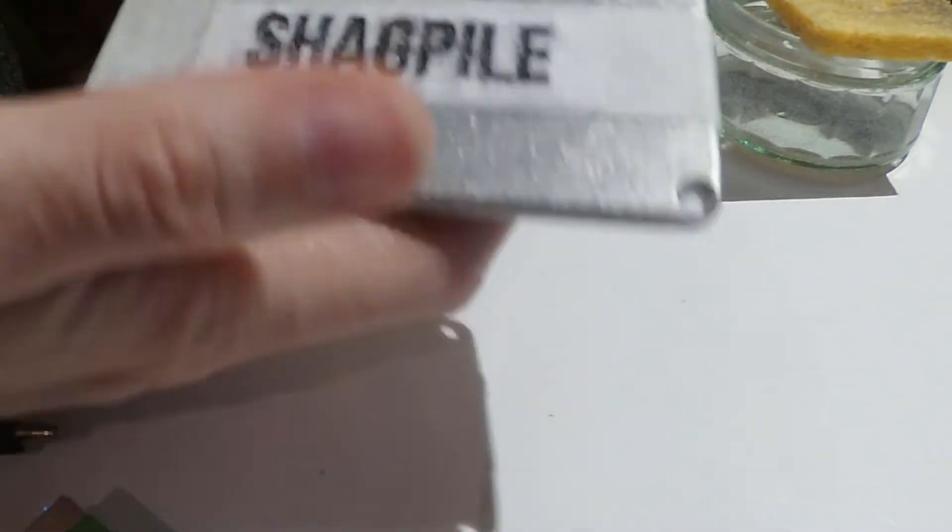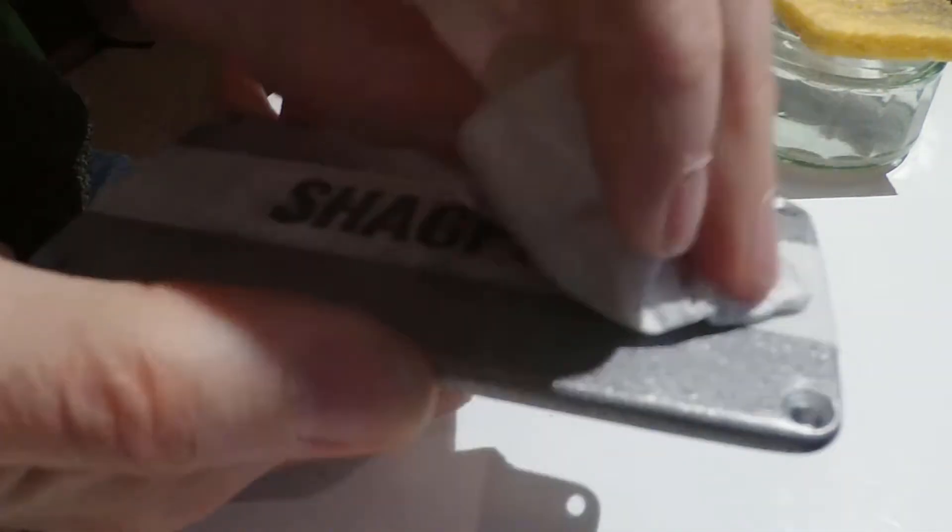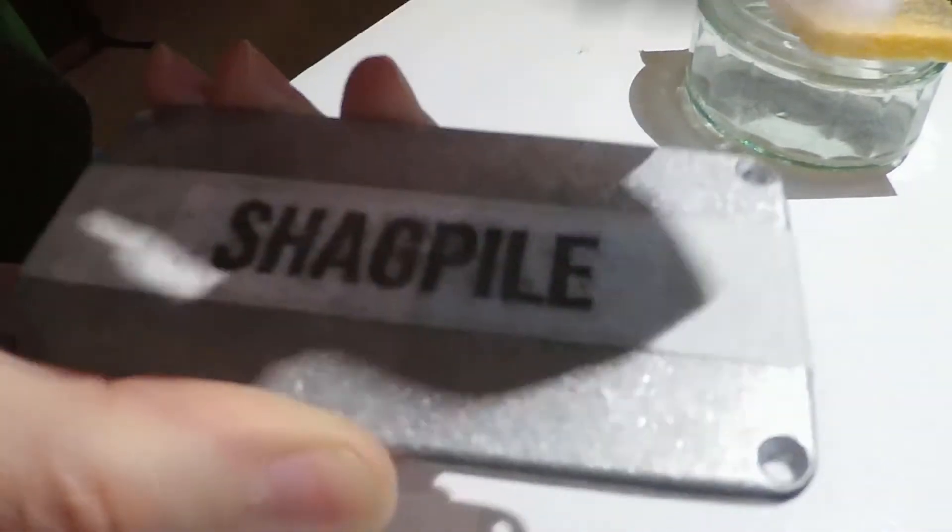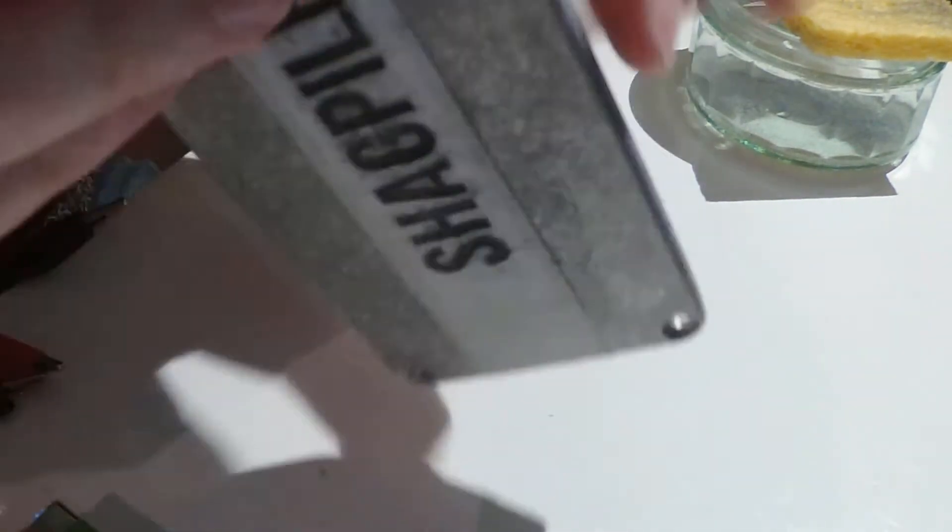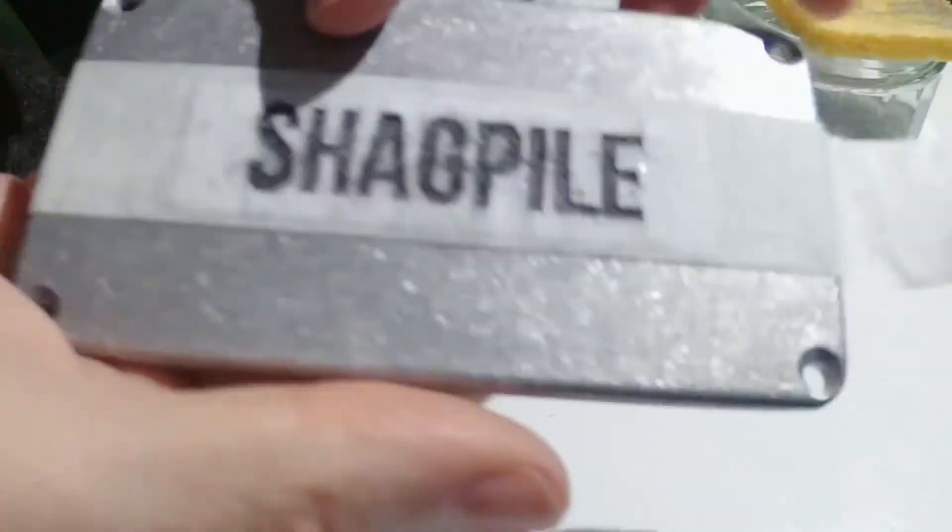And then once you're satisfied with the results, you can dab it dry with a paper towel. Make sure you haven't got any surface moisture. Get it as dry as you can and then just go ahead and peel off your masking tape.